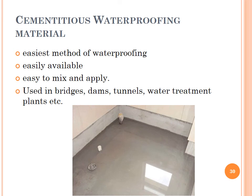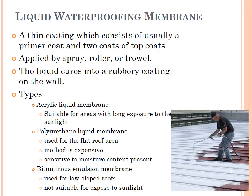Cementitious waterproofing material is the easiest method of waterproofing — easily available, easy to mix and apply. They are mainly used in bridges, dams, tunnels, water treatment plants etc. Liquid waterproofing membrane consists of a thin coat — usually a primer coat and two top coats — applied by spray, roller or trowel. The liquid cures into a rubbery coating on the wall.